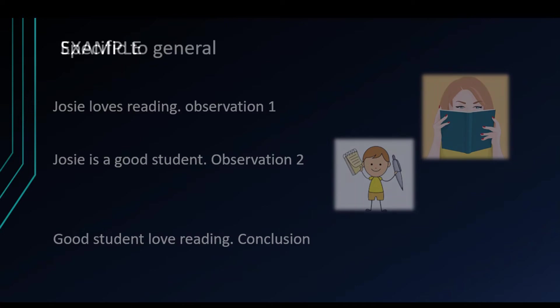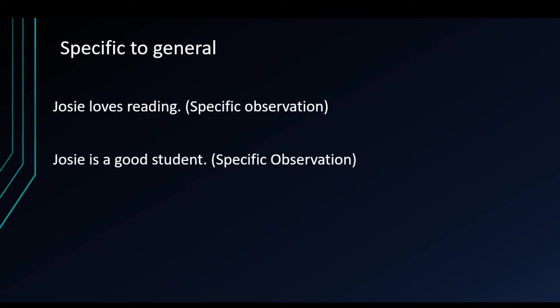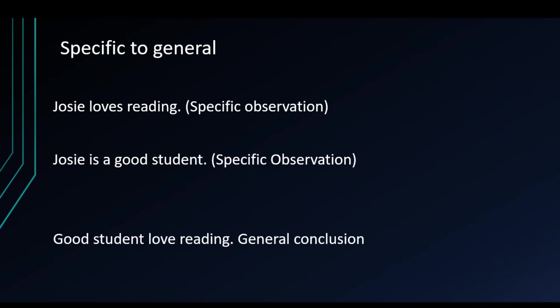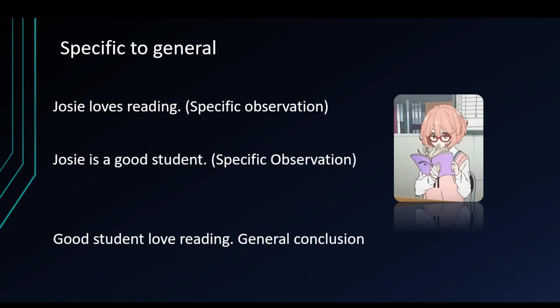Let's also look at the premises from a specific to general perspective. 'Josie loves reading' is a specific observation. 'Josie is a good student' is also a specific observation. 'Good students love reading' is a general conclusion. So the approach in inductive reasoning moves from specific to general.